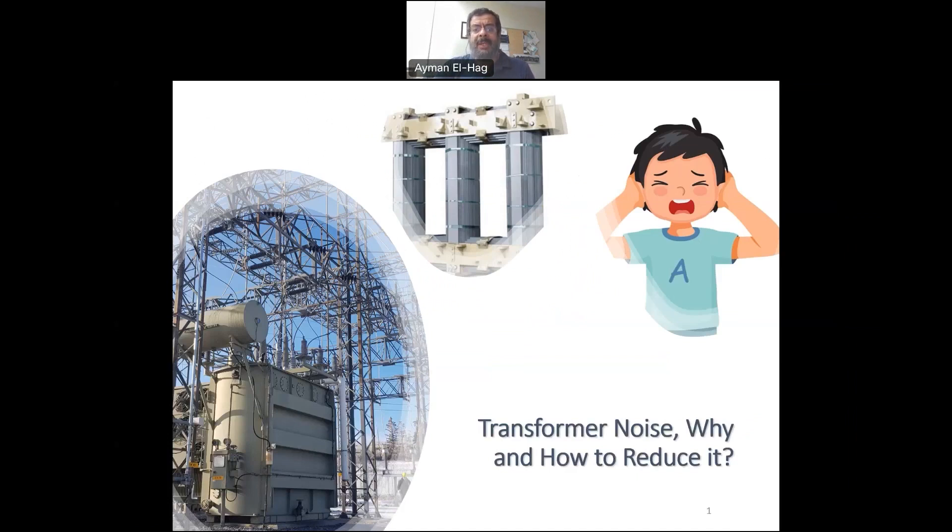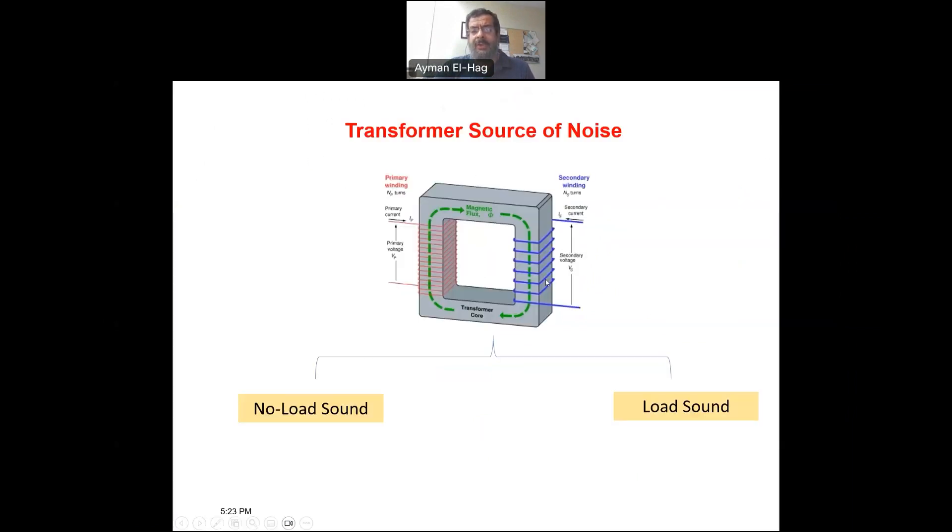So basically the sources of noise in the transformer come from two main parts. The first one comes from the flux in the core. The second one comes from the current in the windings. So let's talk about each one.